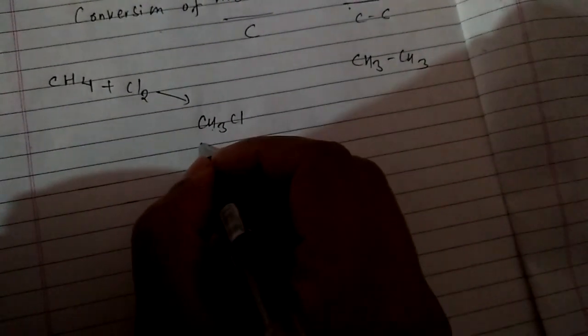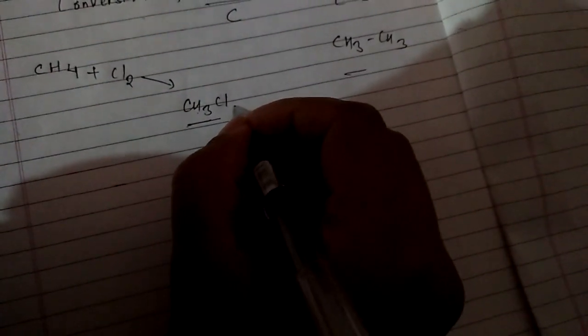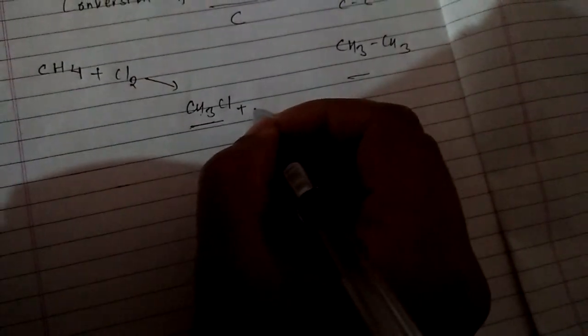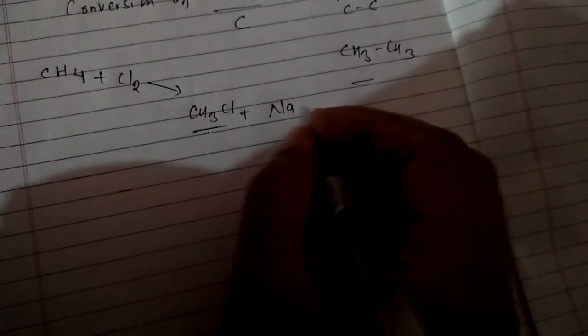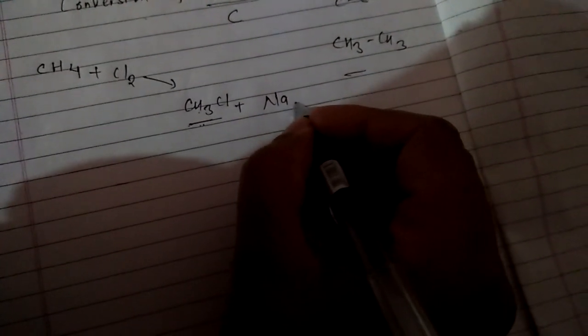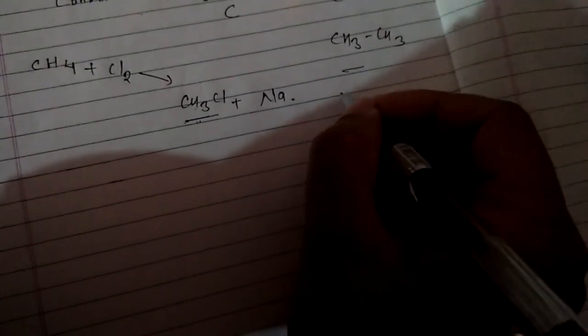When methane reacts with chlorine it gives CH3Cl chloromethane. Chloromethane here has one carbon and we need two carbons. So we can use the Wurtz reaction. That is, haloalkane when reacted with sodium in presence of dry ether gives alkane with double the number of carbons.